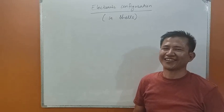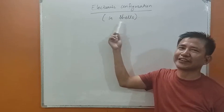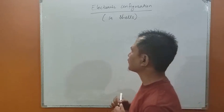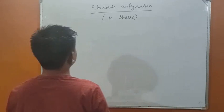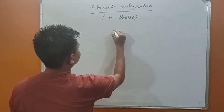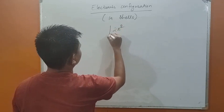Hello students, let's learn about electronic configuration in shells. The distribution of electrons in different shells is given by a very simple formula: 2n squared.